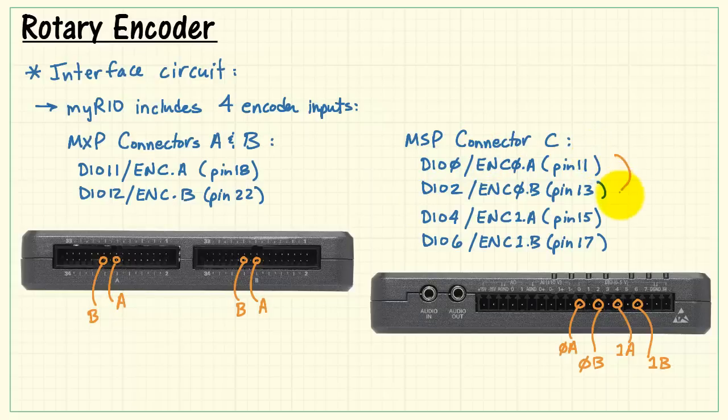On the MSP connector, connector C, we have a pair of encoders available, encoder 0 and encoder 1, also shared with the DIOs.